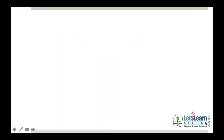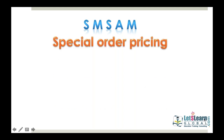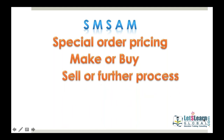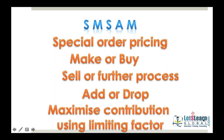Today we'll discuss different types of costs before we go into the topics. The entire topic is based on SMSAM. It stands for S for special order pricing, M for make or buy decisions — whether we should make the goods in-house or outsource the goods — S for sell or further process, A for add or drop a segment or product line, and M for maximizing the contribution using the scarcity factor, limiting factor, or shortage.